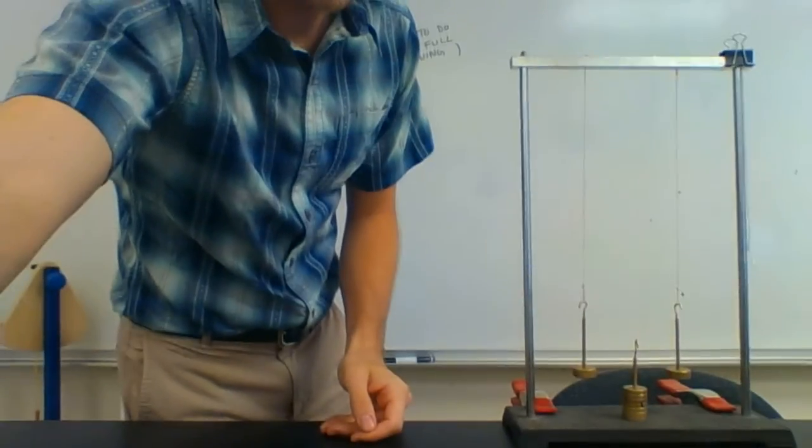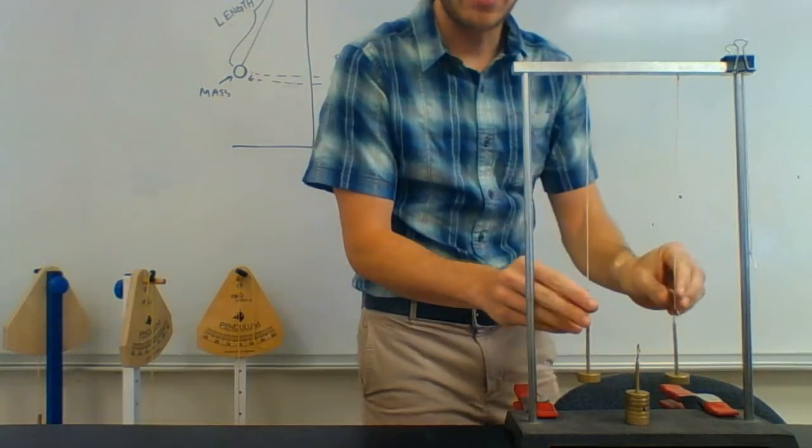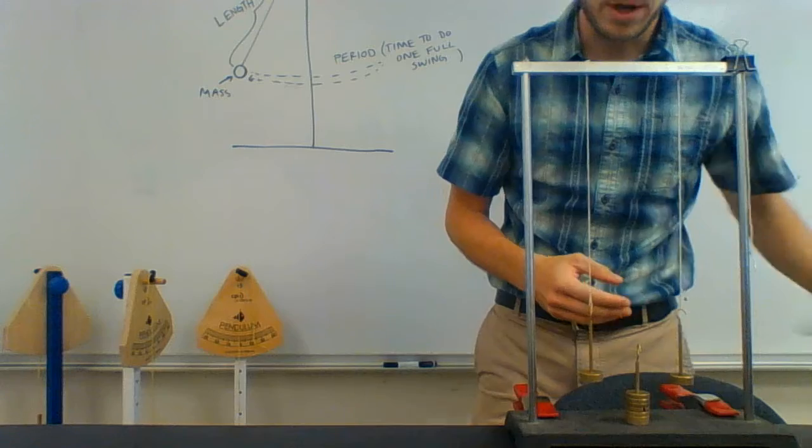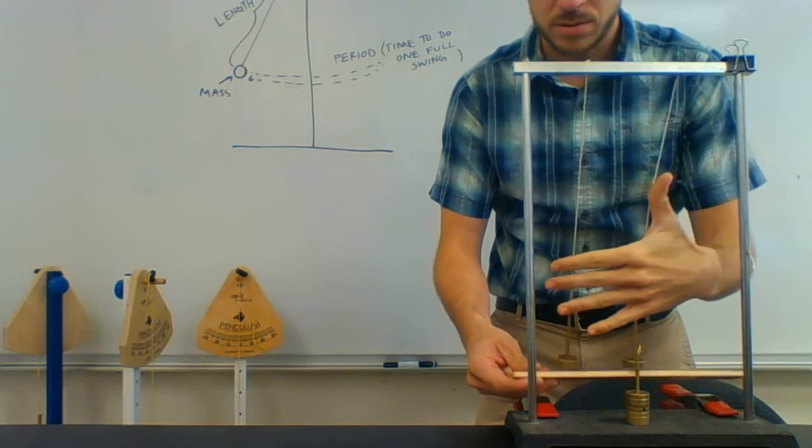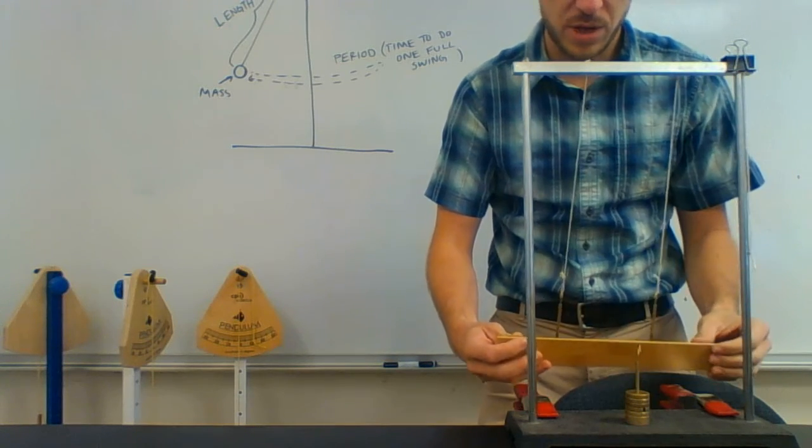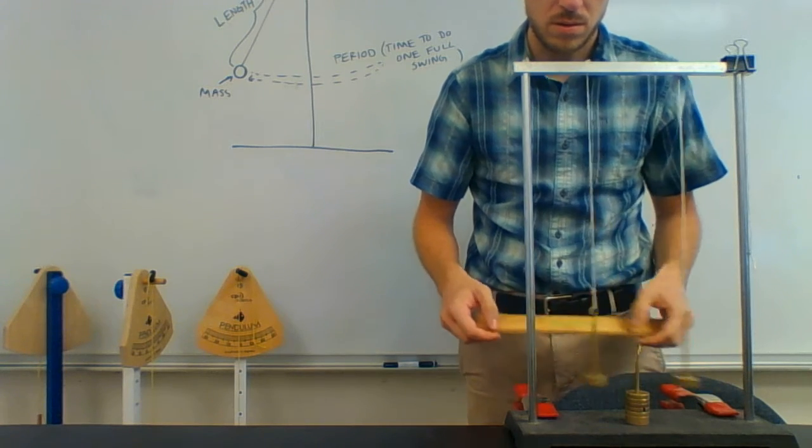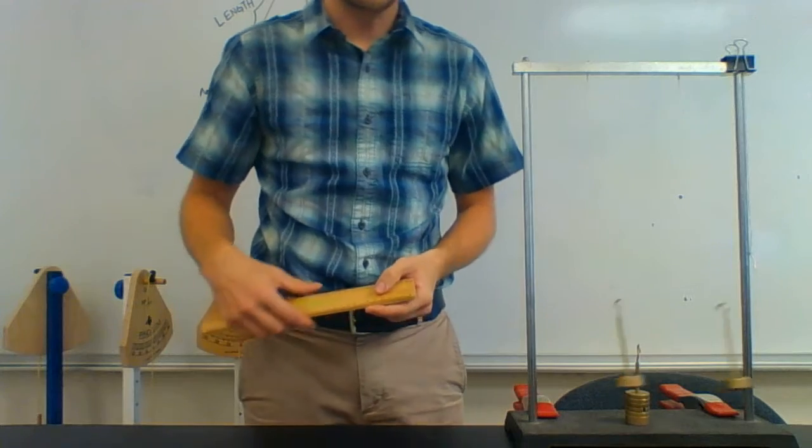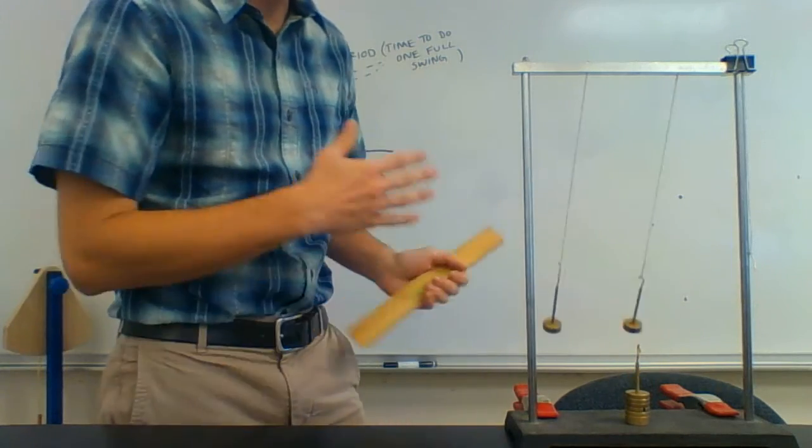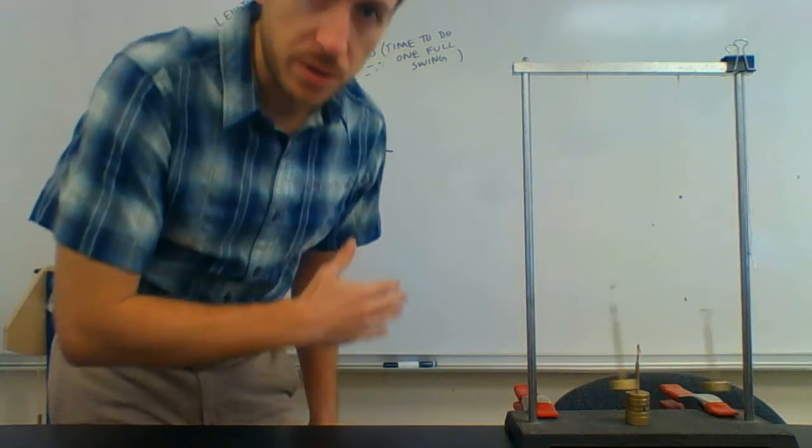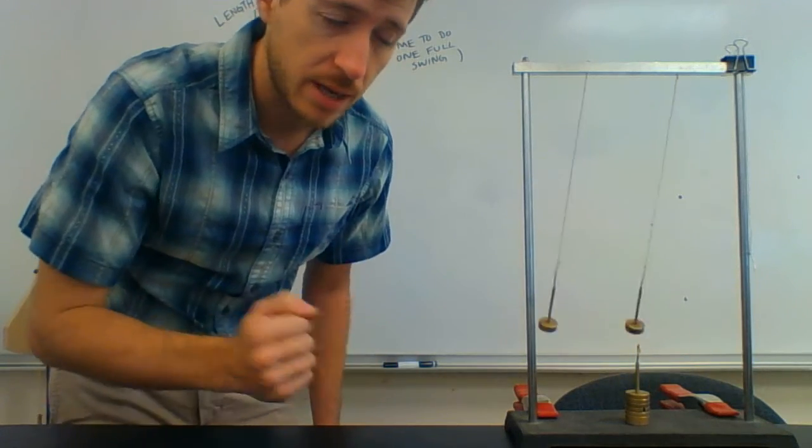So I have this little demonstration set up here. Right now I have two pendulums that are the same mass, the same length, and I'm going to pull them back the same amplitude. And what we expect is that they should have the same period, which you can see there. So they swing back and forth at the same rate, each one doing a full back and forth swing at the same time.